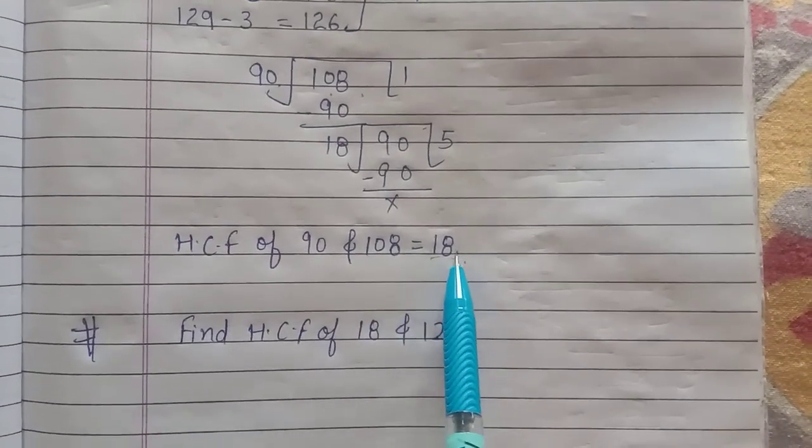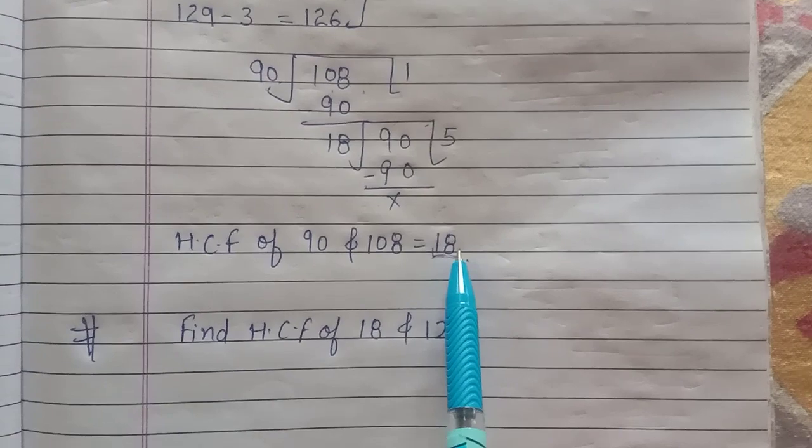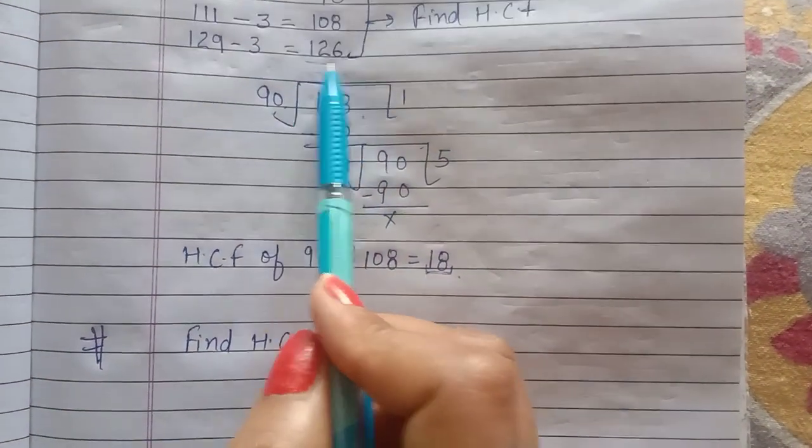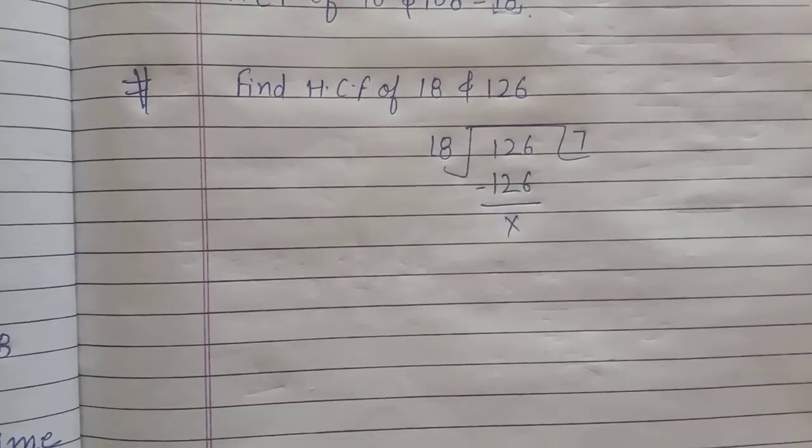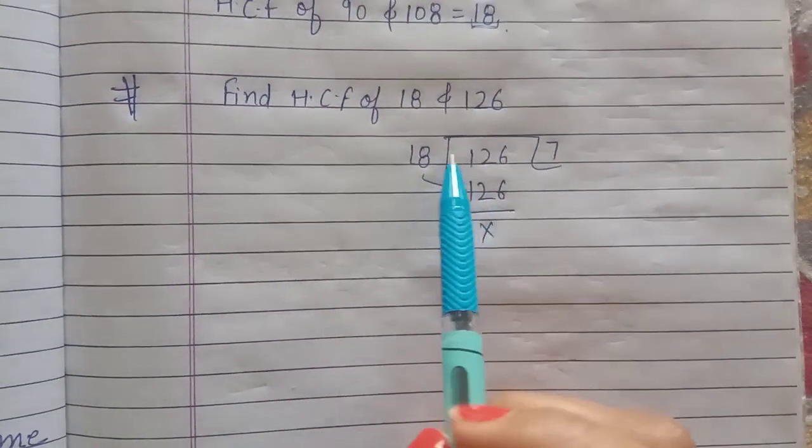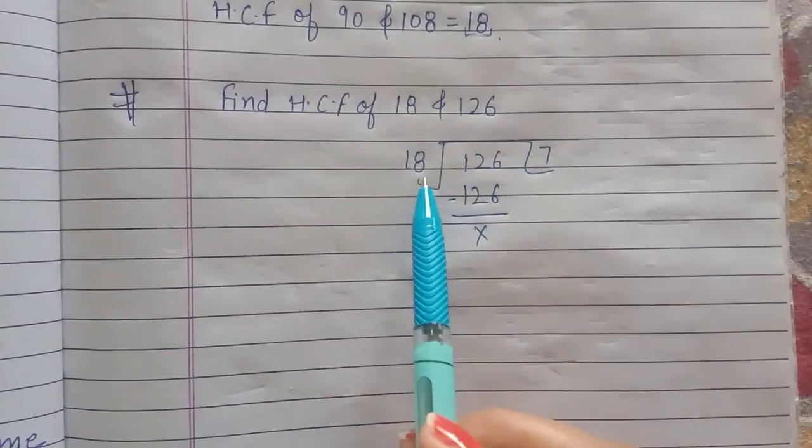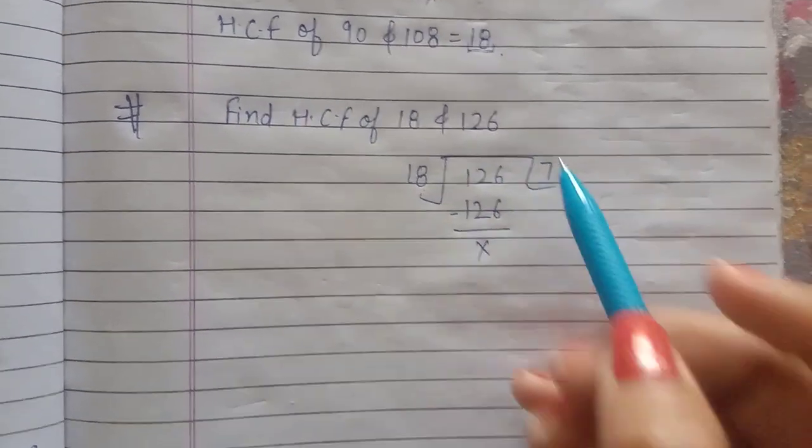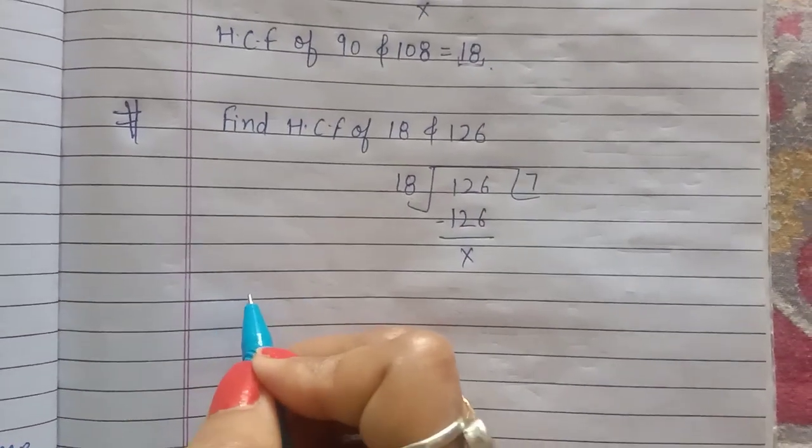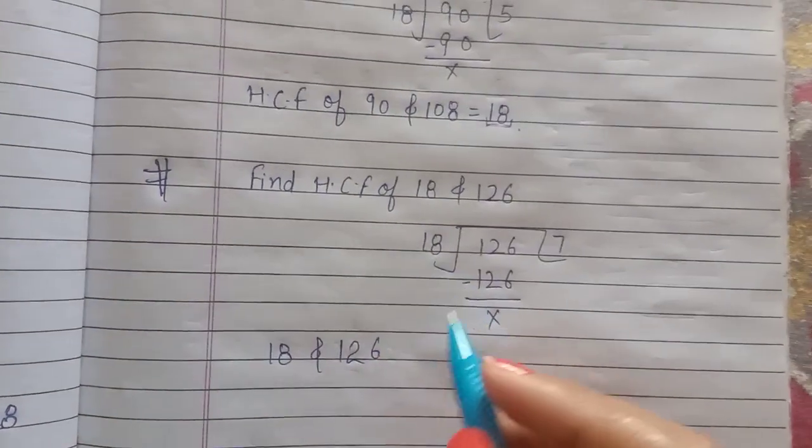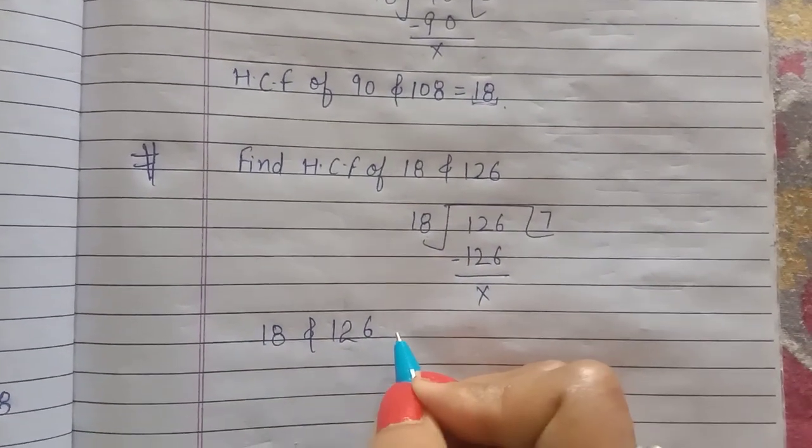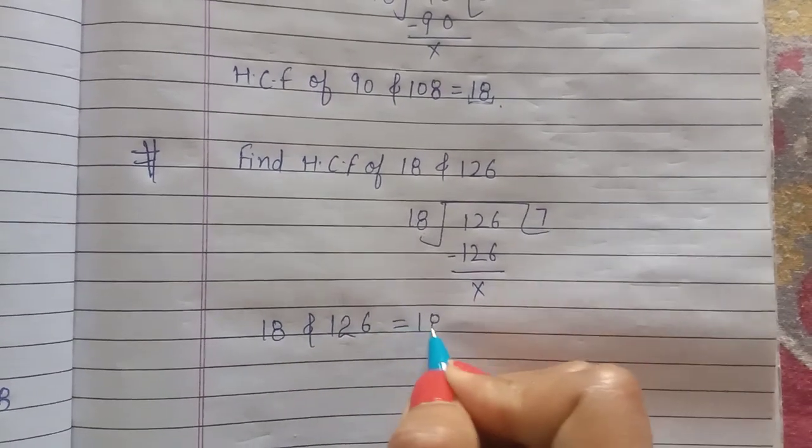First, the HCF will be considered as the first number of the pair, and second is 126. Now we will find the HCF of 18 and 126, which comes out to be 18.